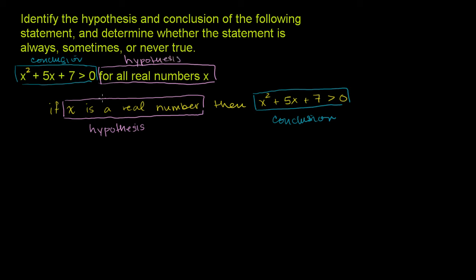Now the more interesting question is whether this statement is always, sometimes, or never true. The first thing to notice is that the coefficient on the highest degree term — the x squared term — is positive. So this is going to be an upward-opening parabola. Whether the statement is always, sometimes, or never true rests on whether the vertex — the minimum point — is above or below the x-axis.